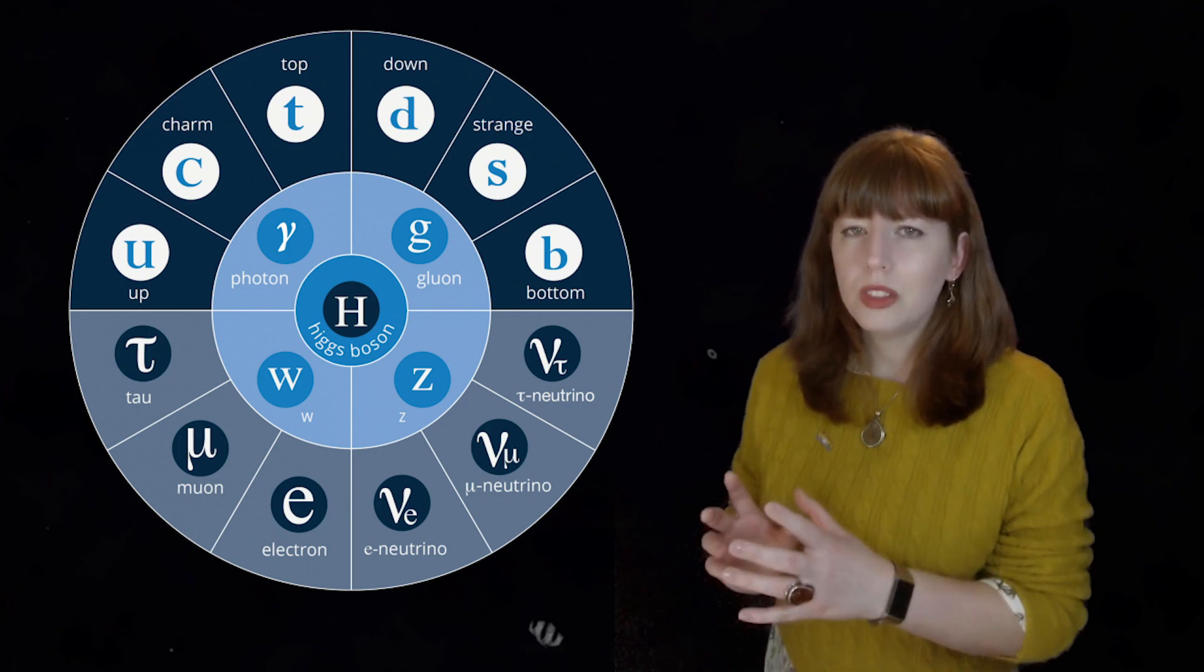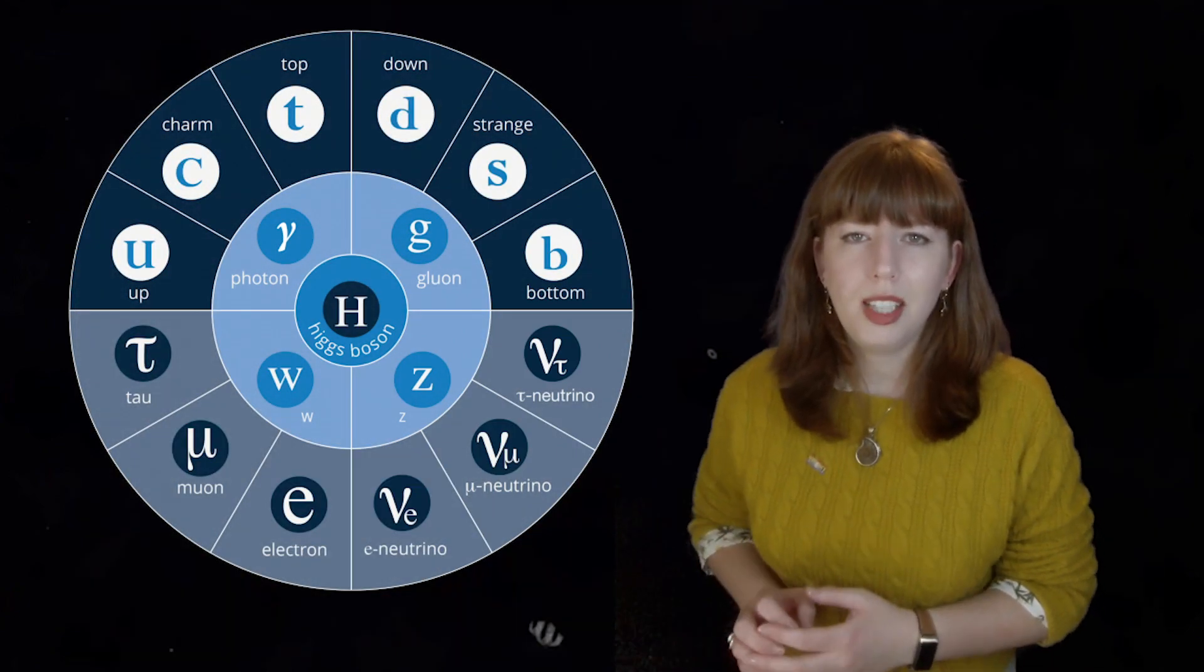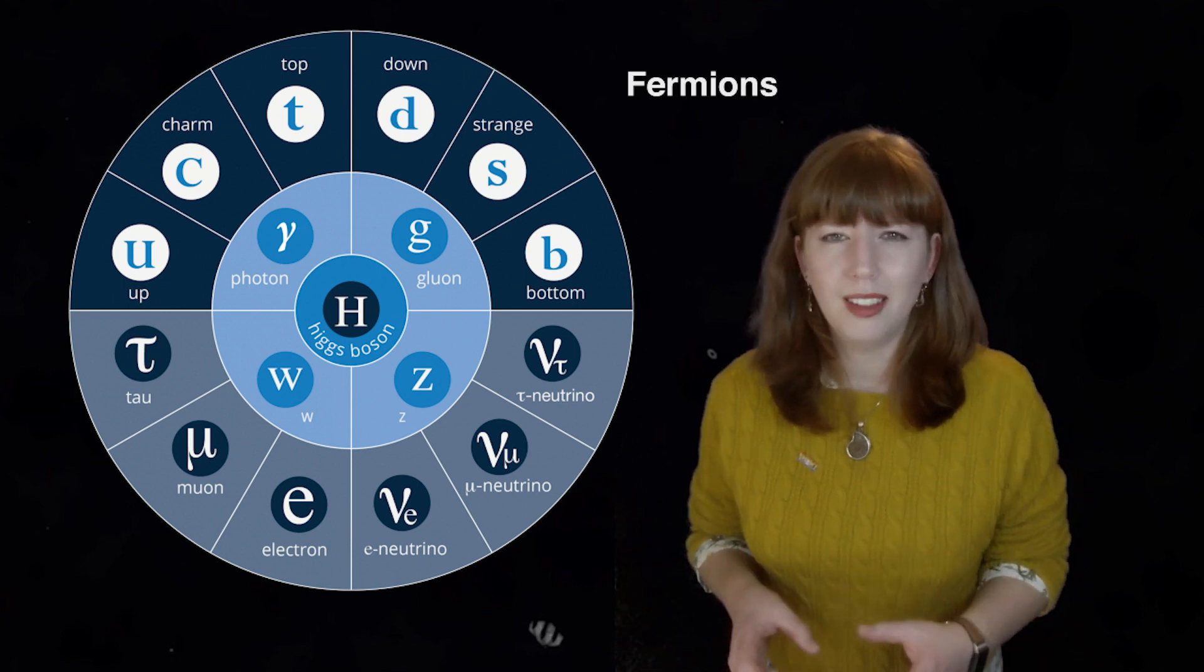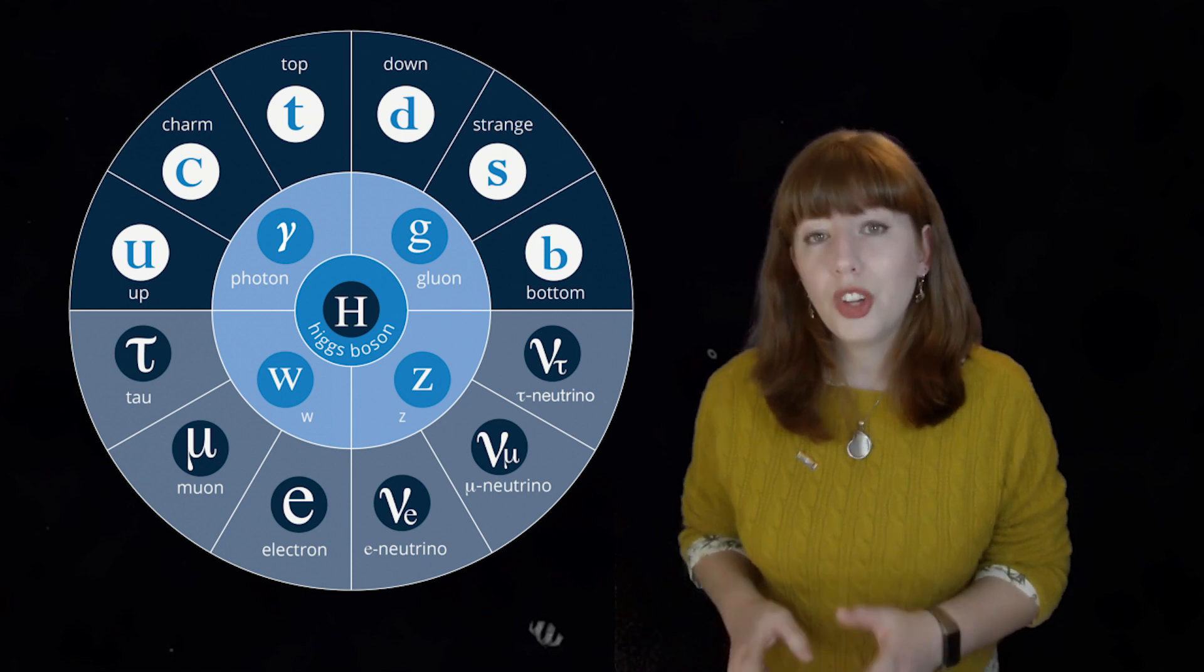On the outside of this diagram, you can see the fermions. These are the particles of matter. They're the stuff. On the top, we have the quarks.